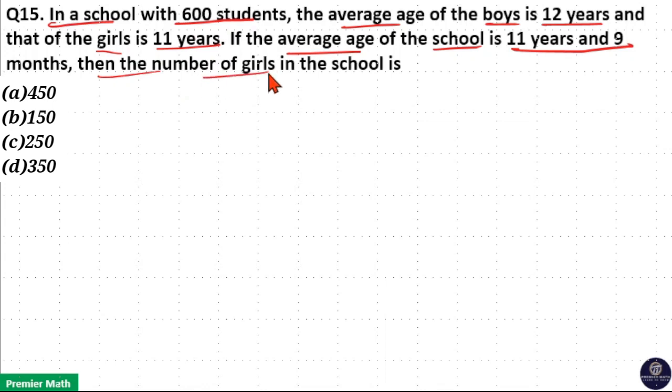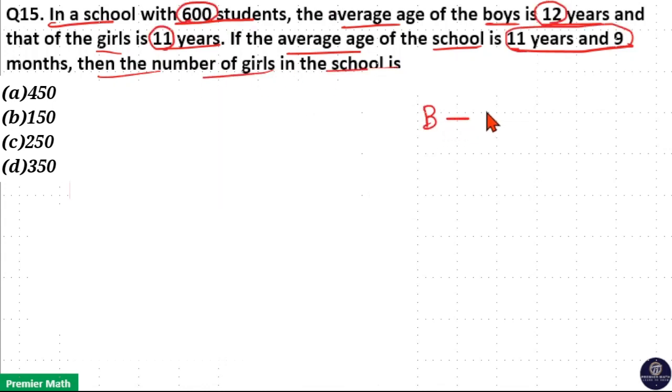then the number of girls in the school is? Here number of boys is B and average of boys is 12 years. Number of girls is G and average of girls is 11 years.